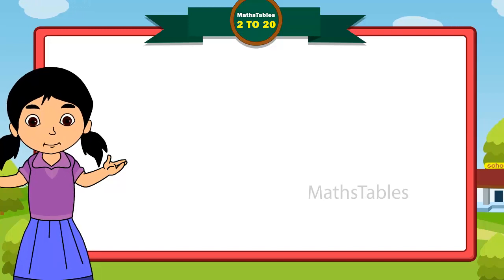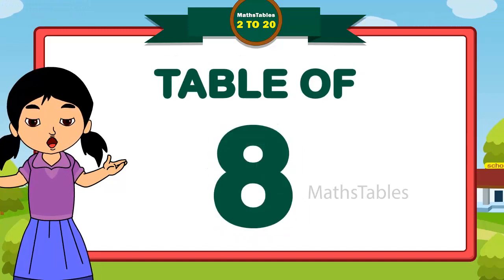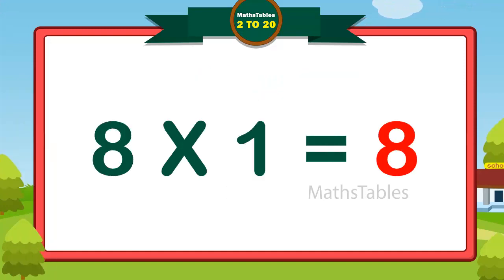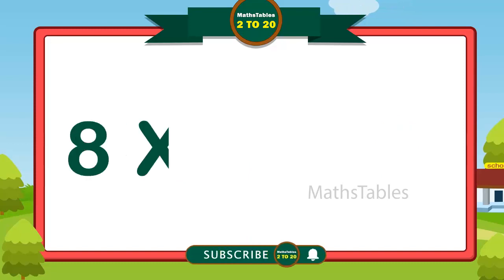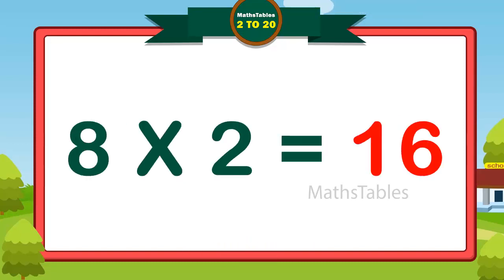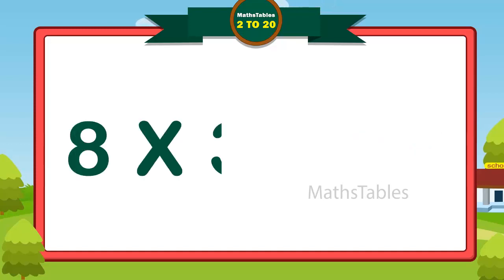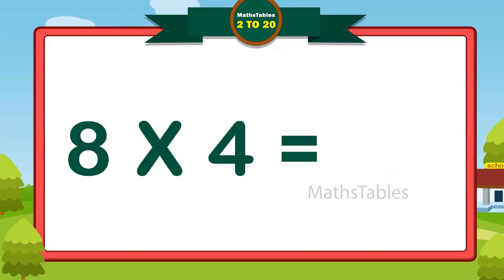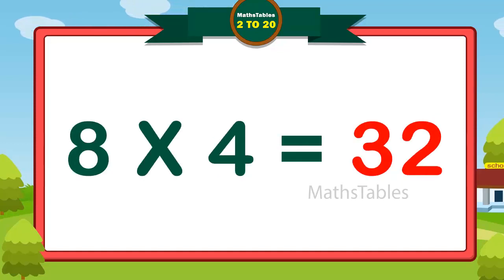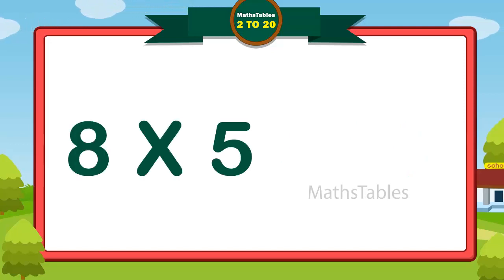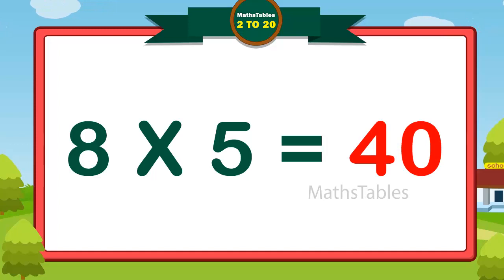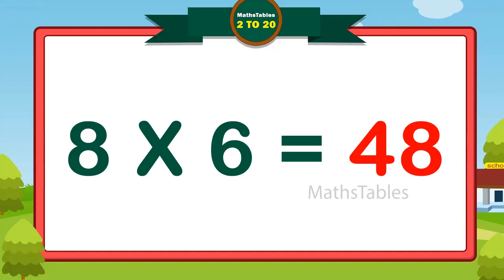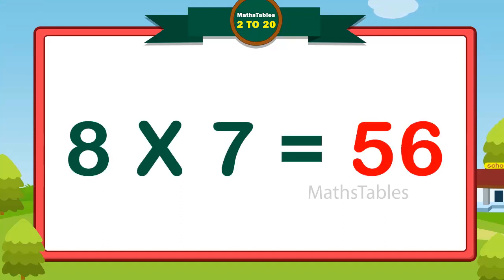Hi friends, now we will learn table of 8. 8 ones are 8. 8 twos are 16. 8 threes are 24. 8 fours are 32. 8 fives are 40. 8 sixes are 48. 8 sevens are 56.